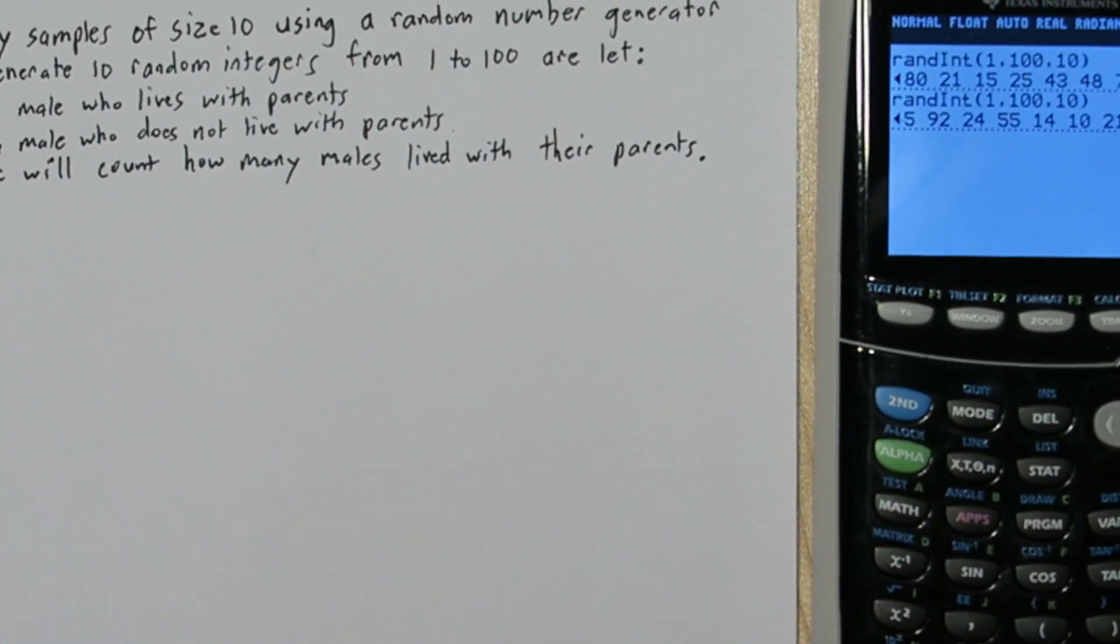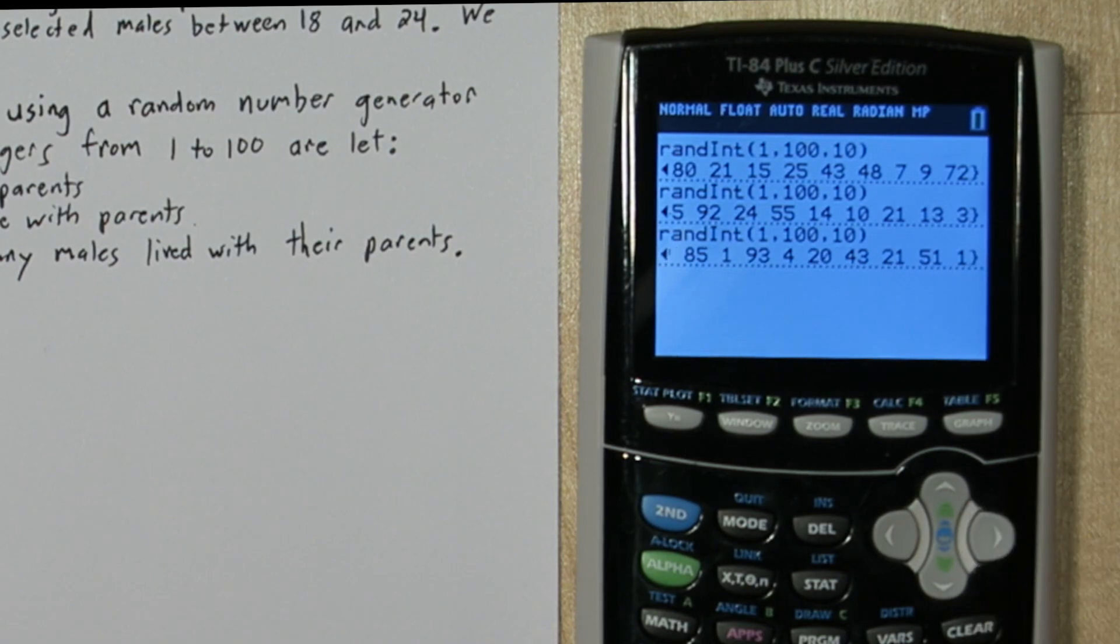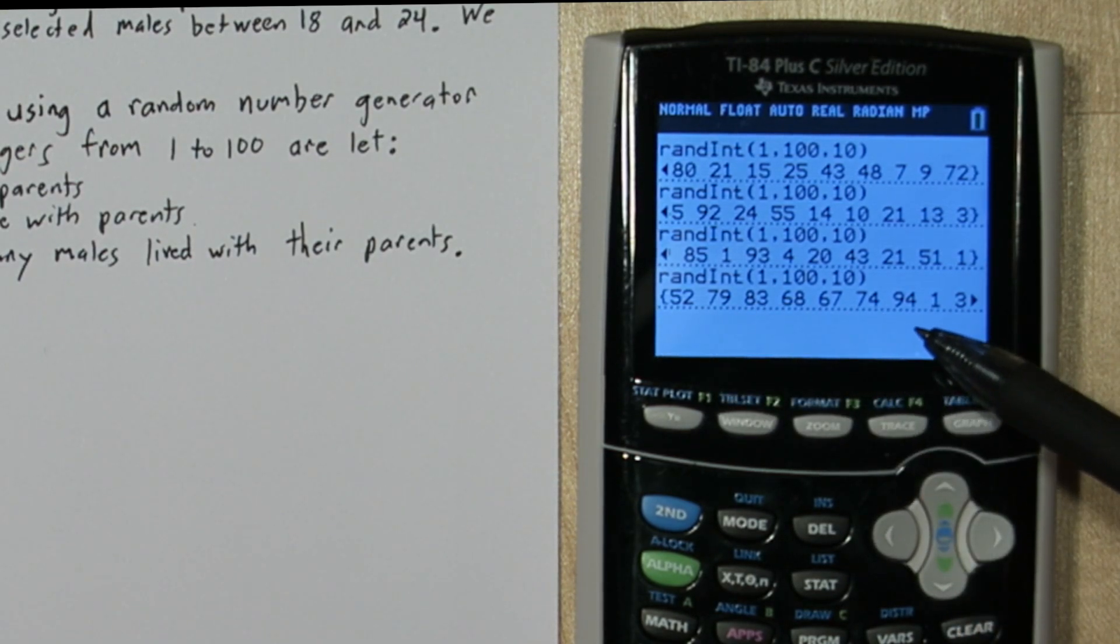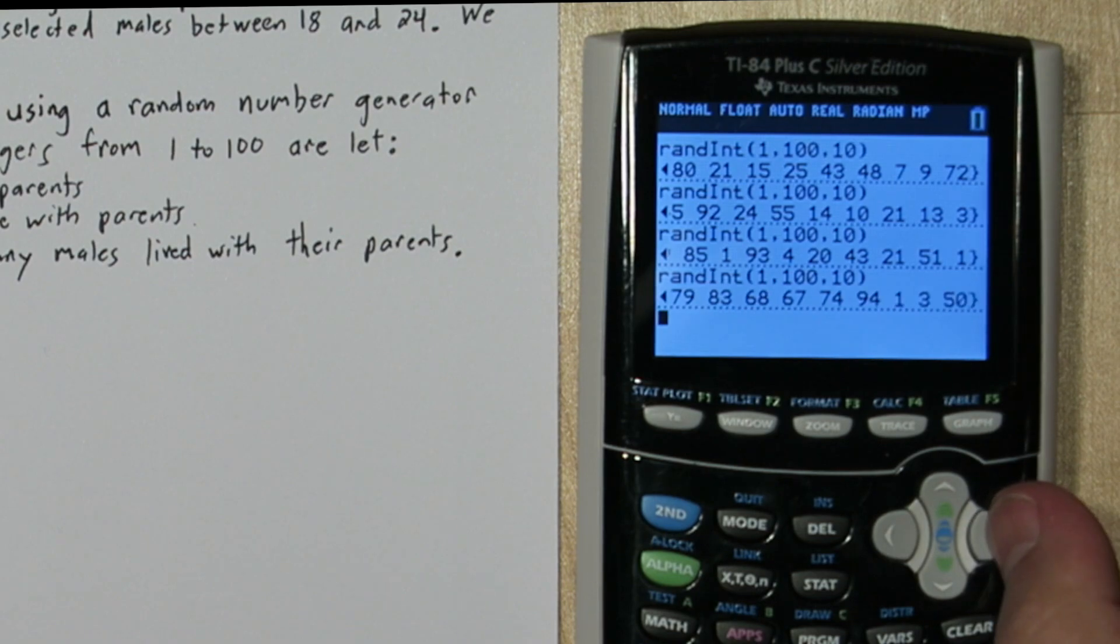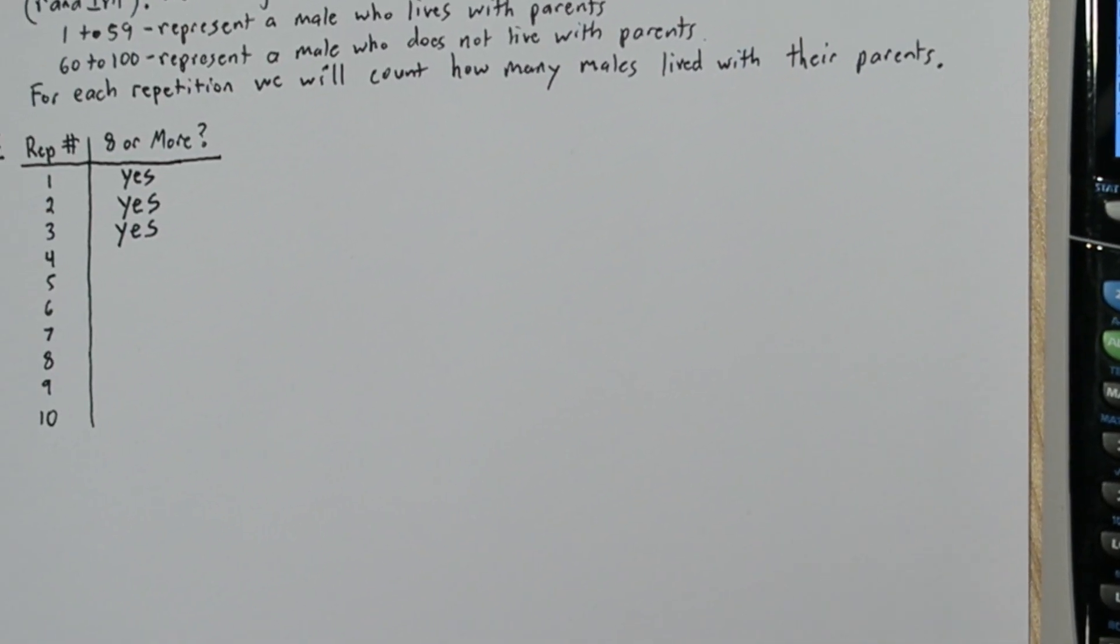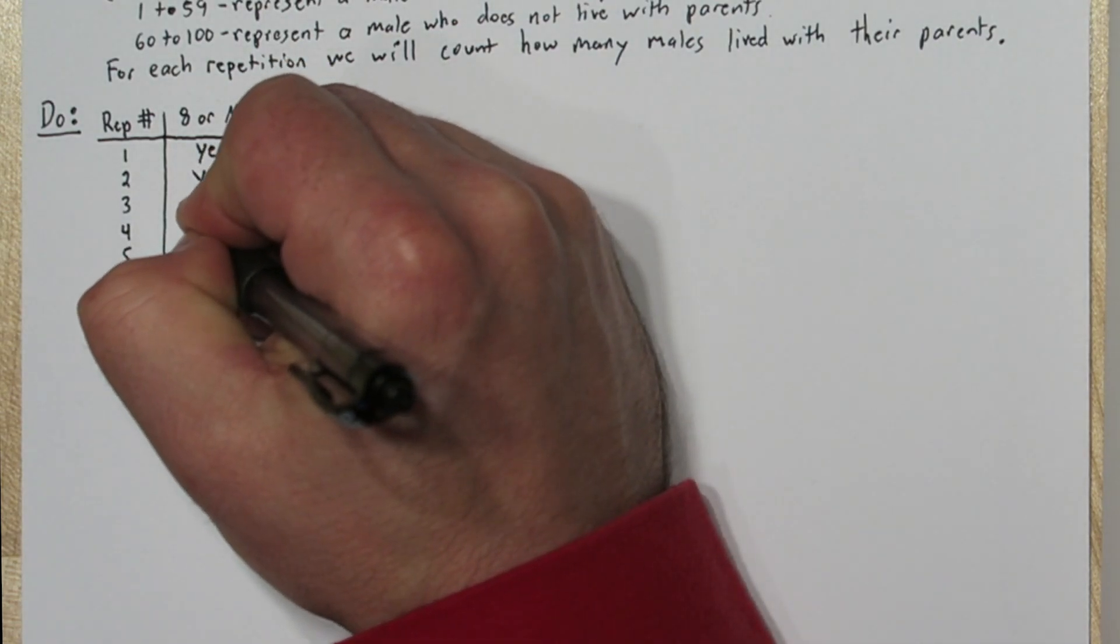And we're just going to do a bunch of reps. Now in our fourth sample here we have 1, 2, 3, 4. We only have 4 numbers between 1 and 59. So this sample represents a random sample of 10 males where only 4 lived with their parents. So for rep 4 we're going to put no.